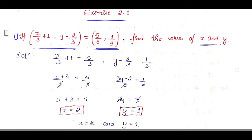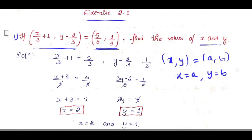Since two ordered pairs are equal — we learned this in last class as note 5 — if an ordered pair (x, y) is equal to ordered pair (a, b), then x coordinates are equal and y coordinates are equal. So from that we get x = a and y = b. Here, I equated the x coordinates: x/3 + 1 = 5/3.